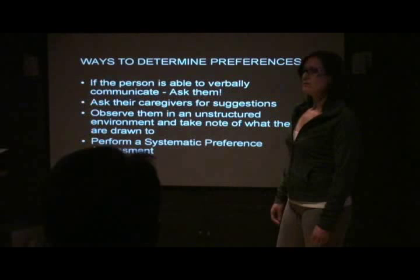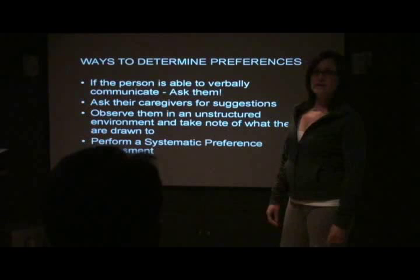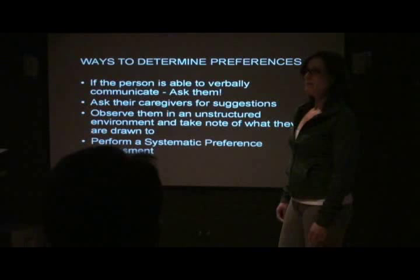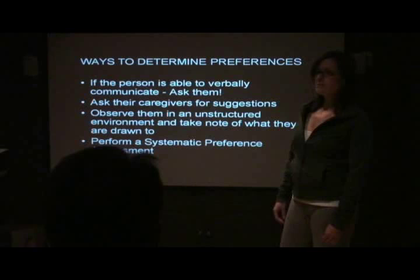There are many ways you can identify reinforcers for these children. One way would be if the person is able to verbally communicate, you can simply ask them. Or you could ask their caregivers or staff who deal with them for suggestions, and this can help generate a menu of potentially reinforcing items. Or you could observe them in an unstructured environment and take note of what they are drawn to.